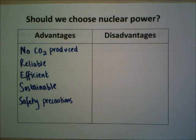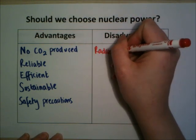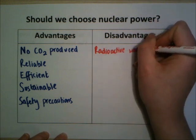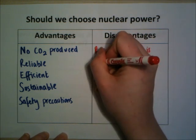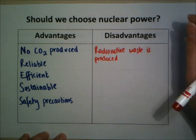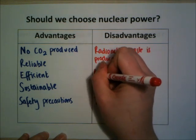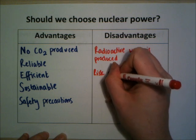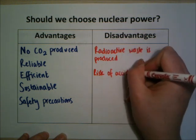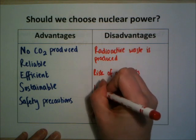Obviously there must be some disadvantages, otherwise we'd be using nuclear power all the time. The main one is that radioactive waste is produced. The actual amounts are quite small — roughly an egg cup of high-level waste and a suitcase of low-level waste per person — but it still has to be dealt with. There's also still the risk of accidents, as seen with Chernobyl and concerns following the Japanese earthquake.